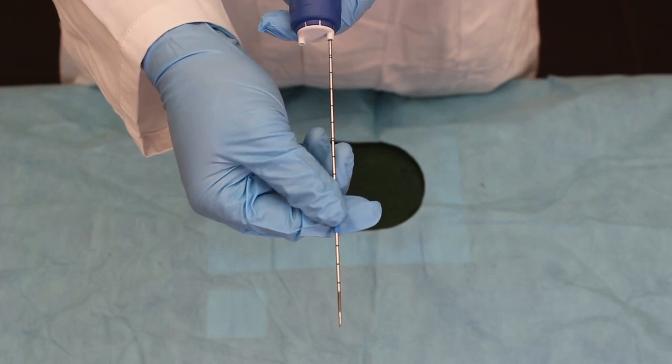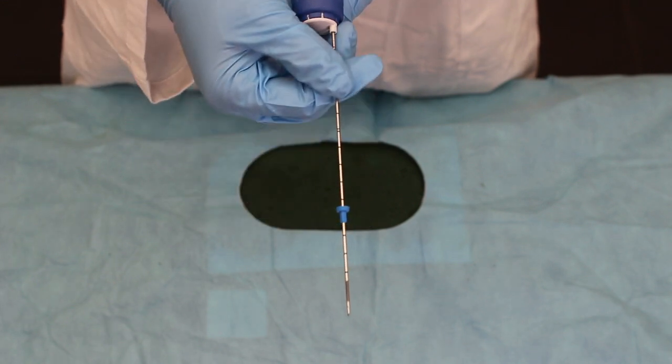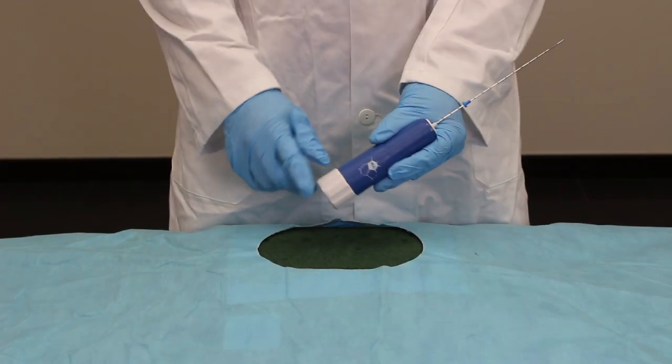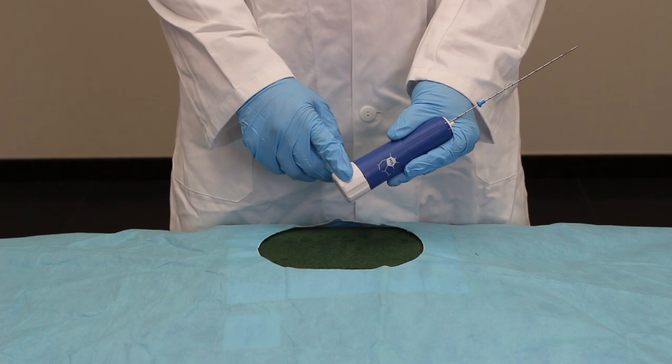Regulate the depth stopper position on the device or the coaxial needle to the desired penetration distance. Prepare the device by twisting the rotational mechanism at the end of the instrument.